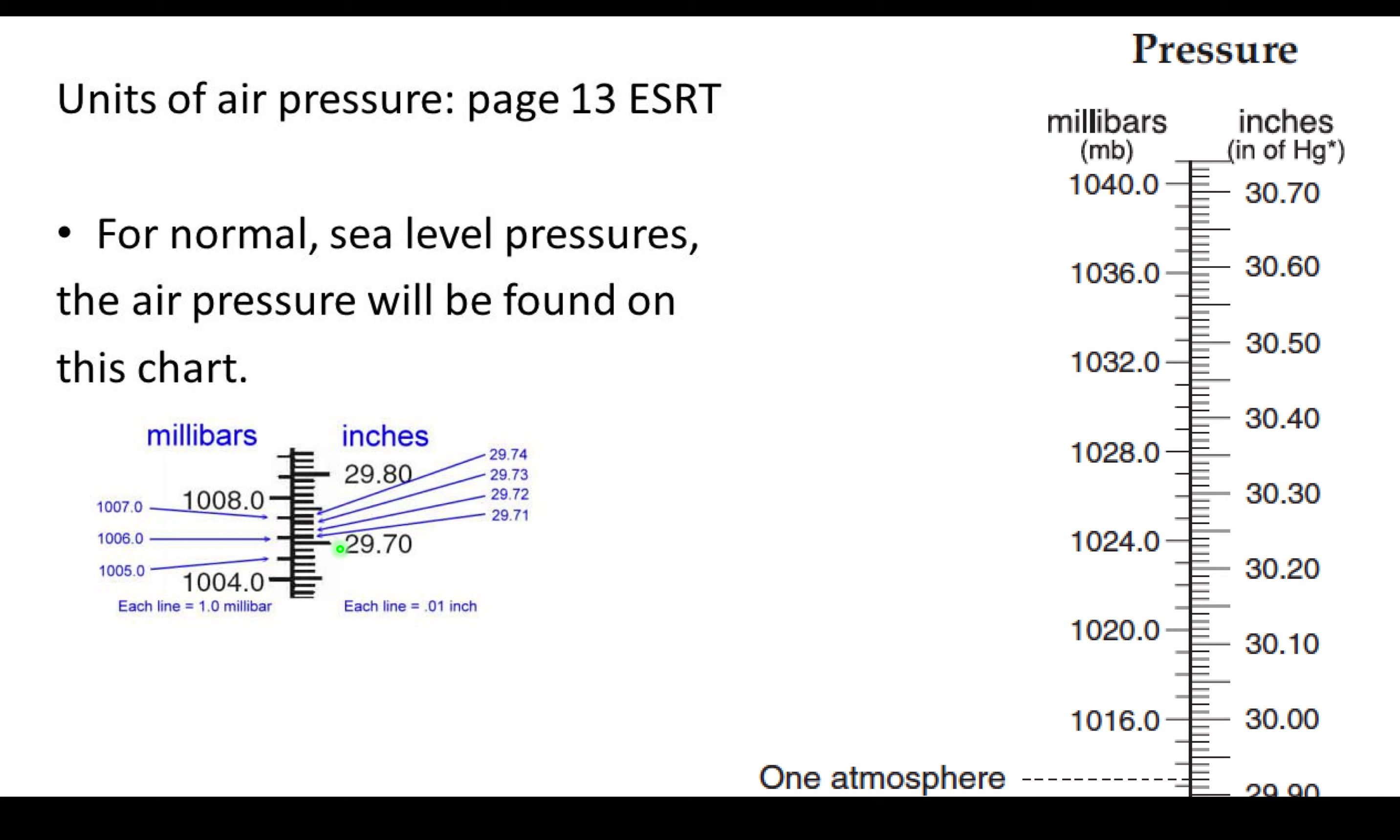However, in inches of mercury, it goes by the nearest hundredth. That is two decimal places. So if we notice, this is 29.7, 29.8. There are 10 spaces. So each individual line, we go up by a hundredth: 0.71, 0.72, 0.73, 0.74. So please make sure that you take that into consideration.